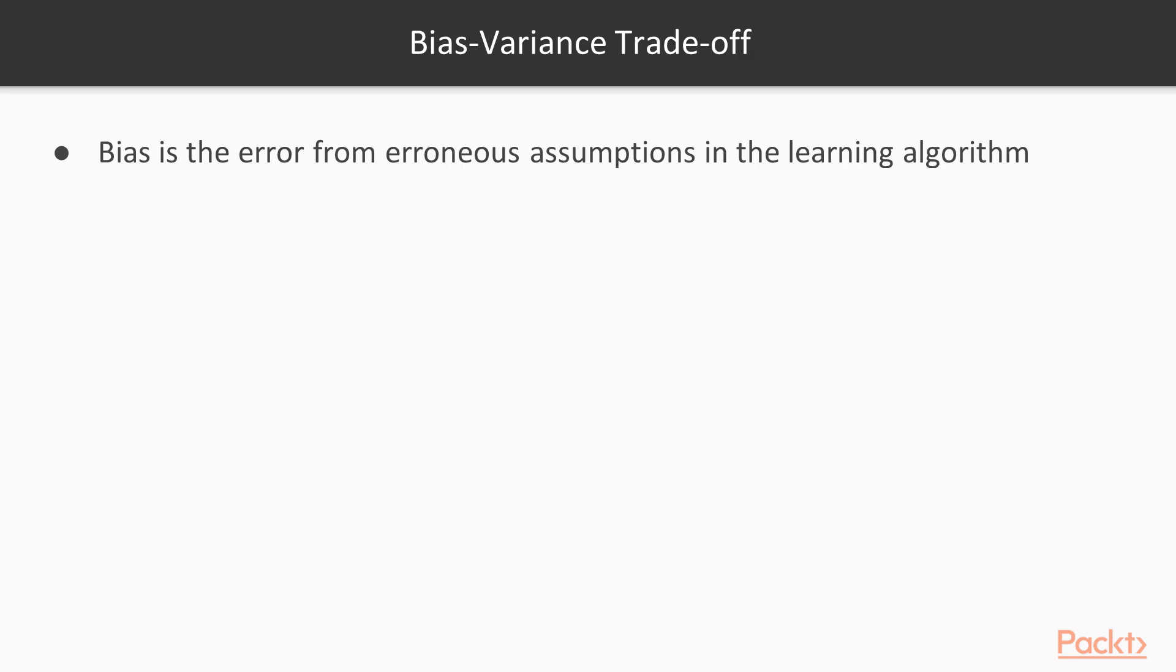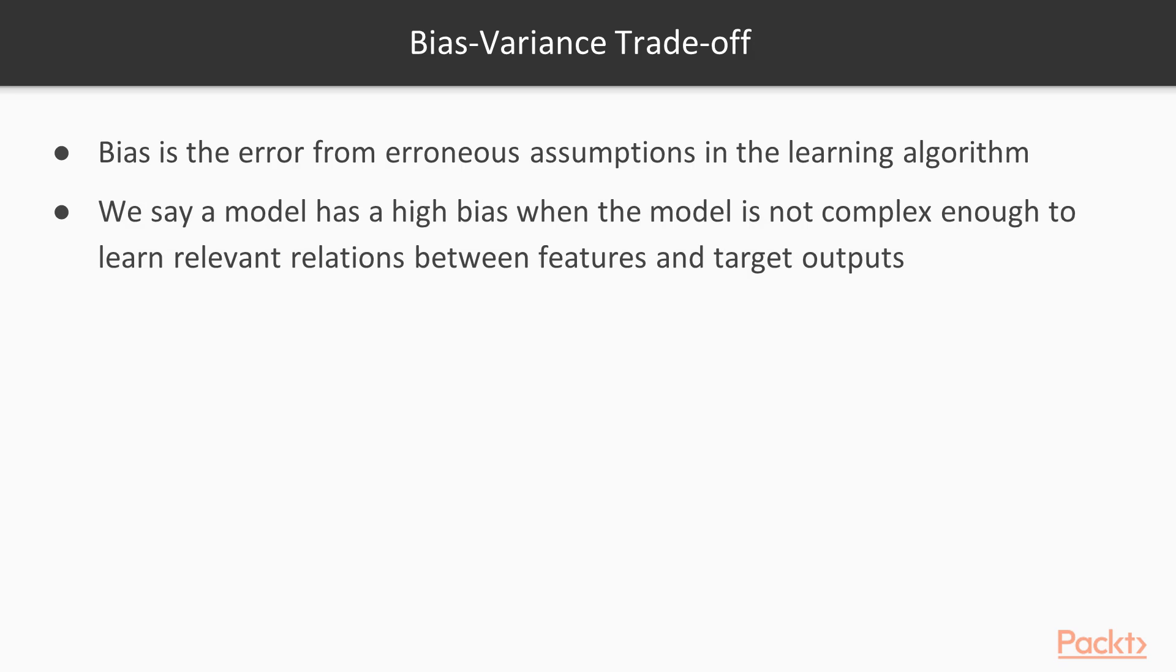Before we get into Bias Variance Trade-off, let's quickly understand what is bias and variance. Bias is an error from erroneous assumptions in the learning algorithm. We get a high bias when the model is not complex enough to learn the relevant relations between features and the target output.